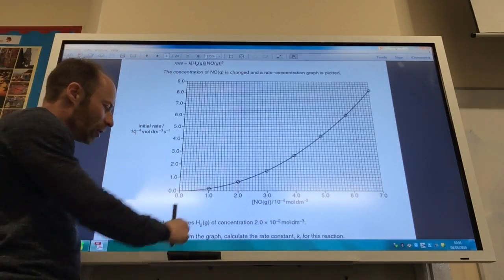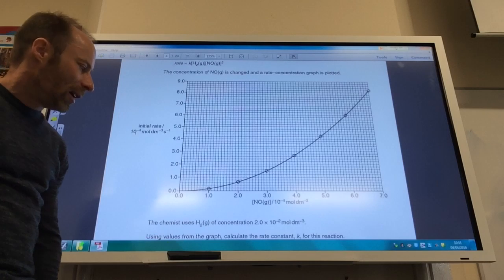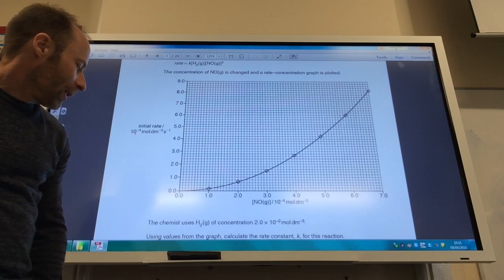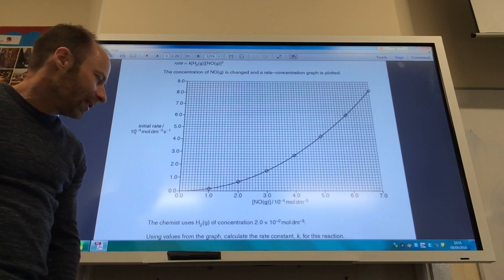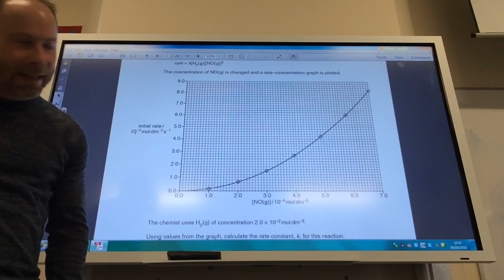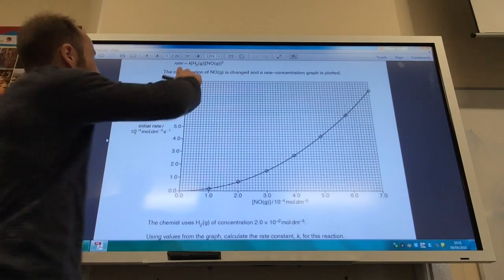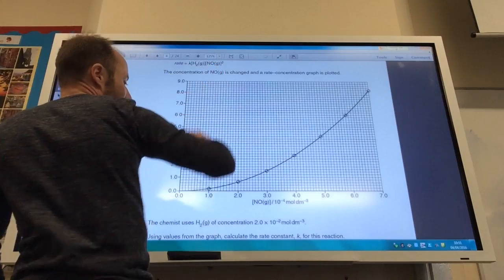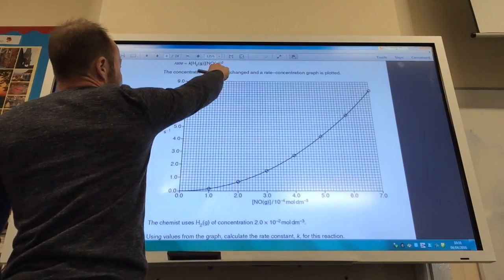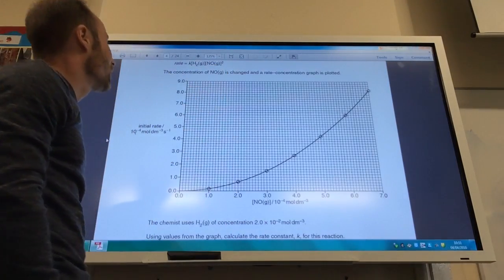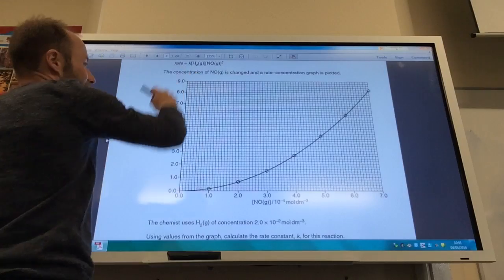The chemist uses that concentration of hydrogen. Using values from the graph, calculate the rate constant K for this reaction. So to calculate K, I need to know the rate. I've got the concentration of hydrogen, so I just need the concentration of nitrogen monoxide at that rate.